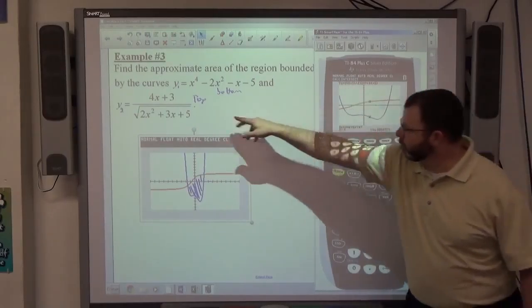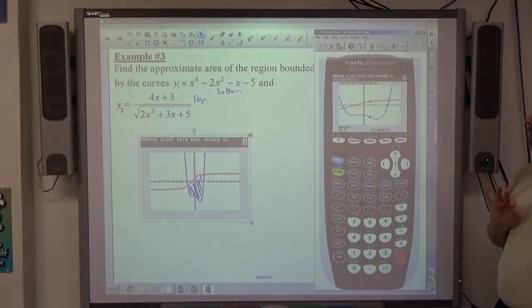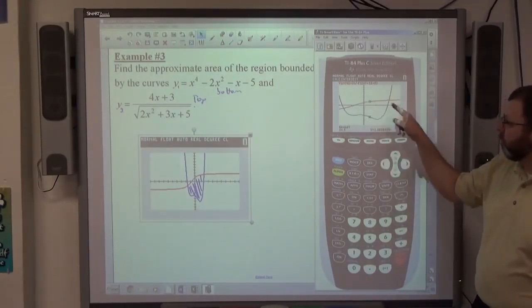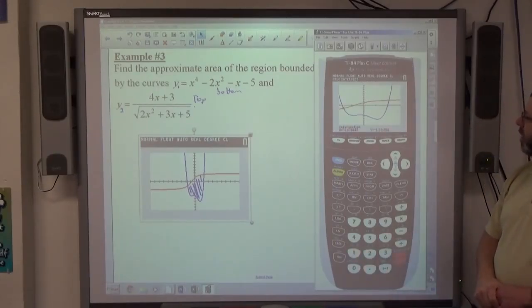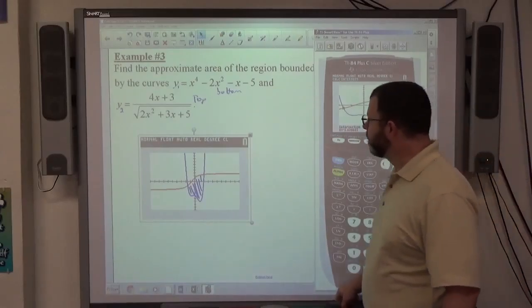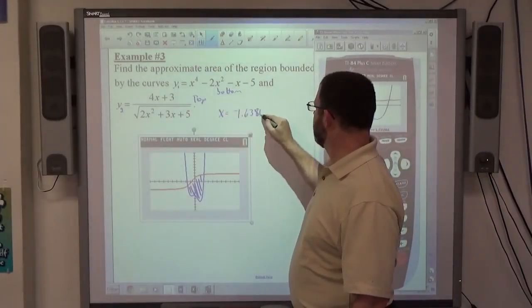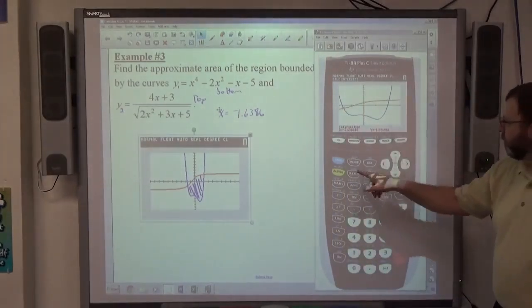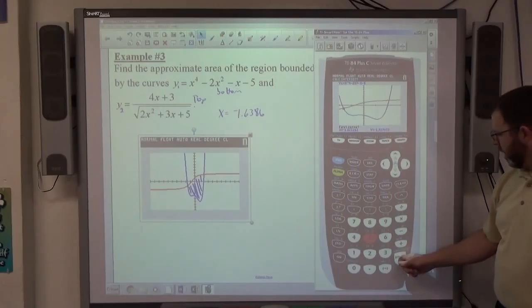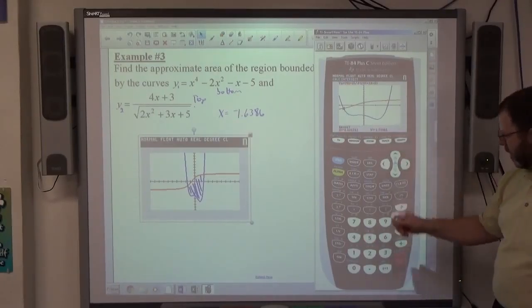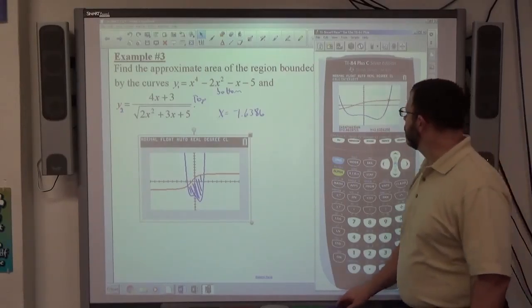The top is this function here. The guess is important where I'm sitting. So I can either cursor over where I want, I can just guess negative one-point six is my guess. And we get negative one-point six-three-eight-six. And then the other point of intersection, second calc five, hit curve one enter, curve two enter, and guess. I'm going to guess 2.1. And then we get 2.0629.